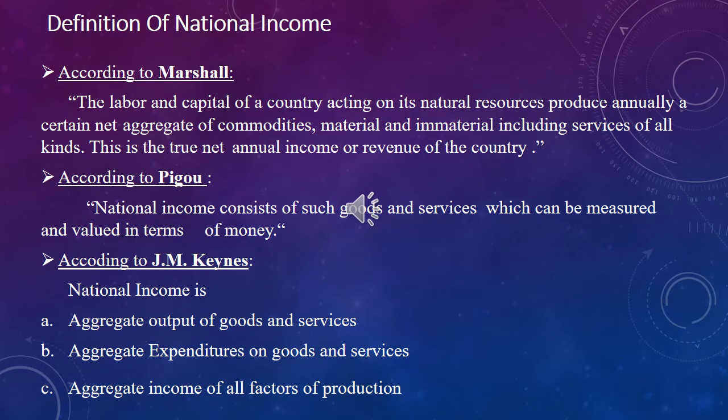Here are some definitions of national income described by different economists. According to Marshall, the labor and capital of a country, acting on its natural resources, produce annually a certain net aggregate of commodities, material and immaterial, including services of all kinds. This is the true net annual income or revenue of the country. So according to Marshall, the aggregate of goods and services produced by four factors of production in a country within a year is national income.